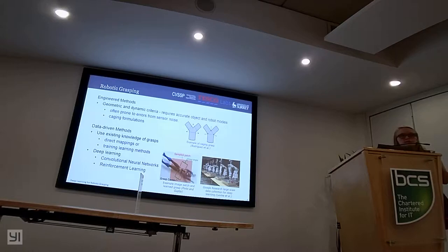There tends to have been two different sides of robotic grasping: the engineered methods with geometric and dynamic grasp criteria. This tends to be quite difficult in the sense that you need accurate object, environment, robot models, and tends to be very tricky with sensor noise, so not really practical for adapting to new situations. On the other side, data driven methods use existing knowledge of grasps to either map from known grasps to similar objects or use it as training data for machine learning.